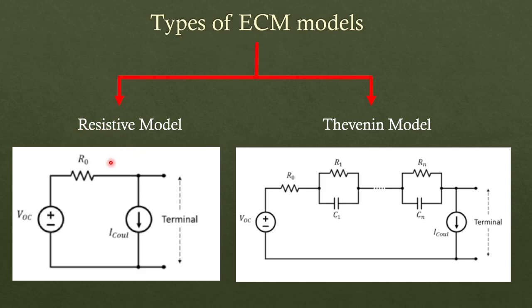So the resistive models, as you can see, consist of open circuit voltage Voc and internal resistance R. On the other hand, Thevenin models, apart from resistive models, also consist of additional RC branches. So you can have multiple RC branches: 1, 2, 3, 4, up to 5. Typically three RC branches are more than sufficient to capture most of the dynamics.